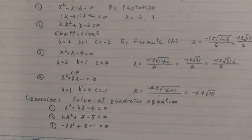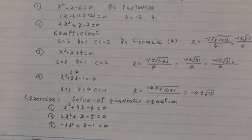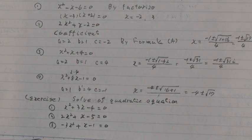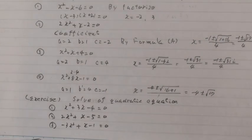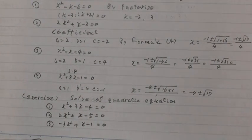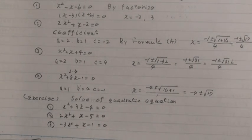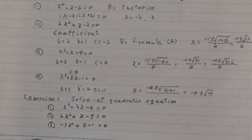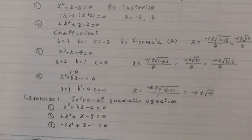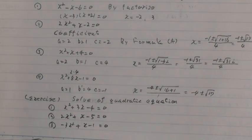And exercises: circle 1, x squared plus 3x minus 4 equals 0 — find the solution. And circle 2, 2x squared plus x minus 5 equals 0. And last question, circle 3, minus 3x squared plus x minus 1 equals 0 — find the solutions. It's finished.